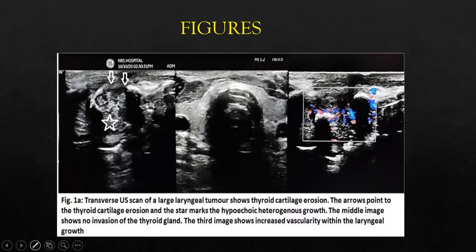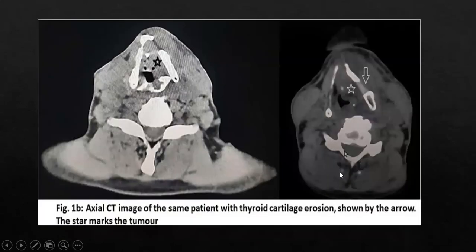This is a sample study image. The transverse ultrasound using a large transducer shows thyroid cartilage invasion. The second image shows that the normal thyroid gland is not involved. We can see vascularization of the mass within the larynx. The CT showed the mass and clearly demonstrates the thyroid cartilage invasion.